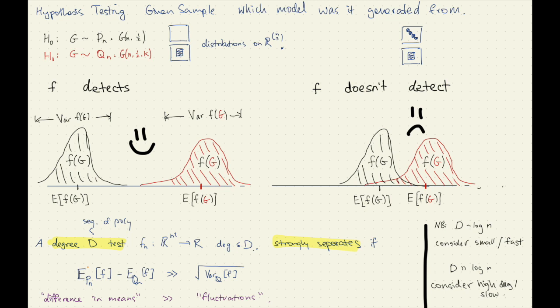Anything higher would be considered too slow. By working, we mean that we want this difference in mean to overcome the fluctuations. We've got two different problems — for example, you could have either no planted structure, one planted community, or a K-and-one case. You want that when you have your graph or matrix structure sampled from one of these, then your polynomial is going to be high in one and low in the other, with a gap bigger than the square root of the variance.